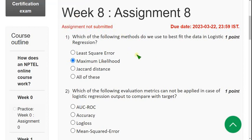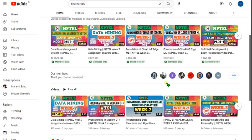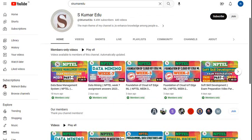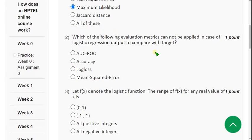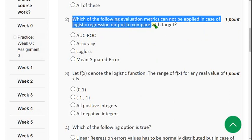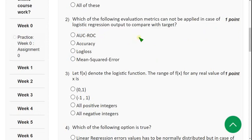Let's see the second question now. Which of the following evaluation metrics cannot be applied in case of logistic regression output to compare with target? The answer is fourth option: Mean Squared Error.